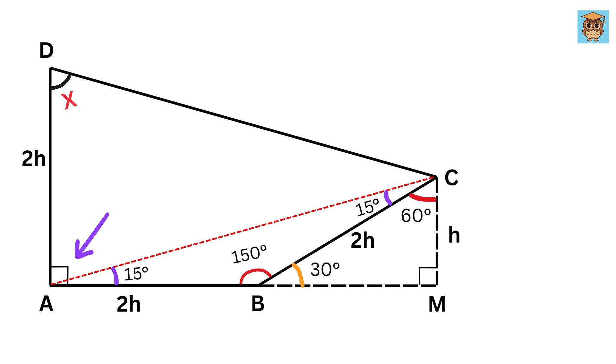Next, consider the angle DAB, which we know is 90 degrees. But angle DAB equals angle DAC plus angle CAB. So, we get 90 equals angle DAC plus 15 degrees, therefore angle DAC equals 75 degrees.